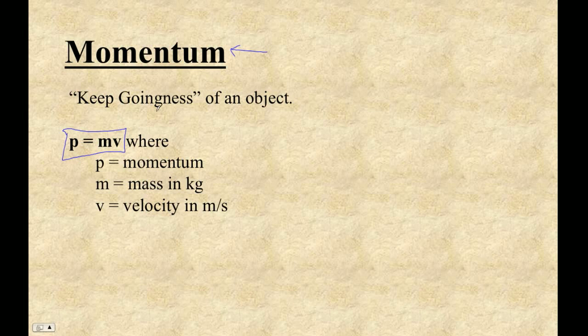I call it the keep goingness of an object. And by that, I mean some combination of mass and velocity makes you tend to keep going. So if you're in a collision, you're going to keep going your way. If you either have a lot of mass, or maybe a lot of velocity, or both.